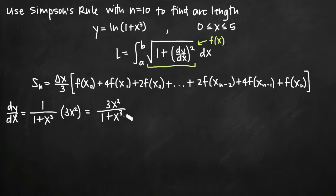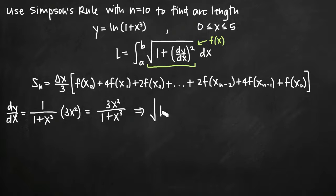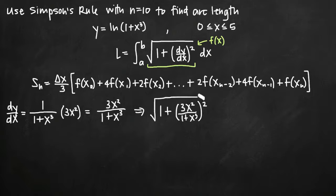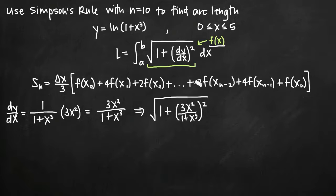This is our derivative function, the value we plug in for dy over dx. Now we just take the square root of 1 plus the quantity 3x squared over 1 plus x cubed, all squared. And this is our f of x — the function into which we're going to be plugging in values x sub 0, x sub 1, x sub 2, x sub 3, etc.